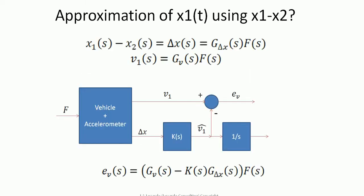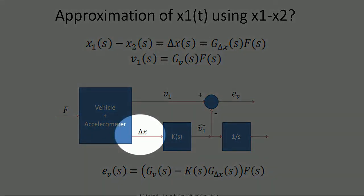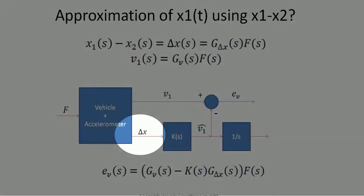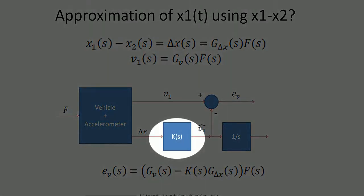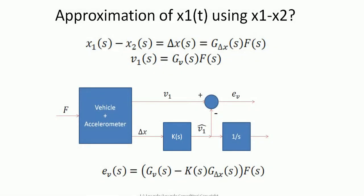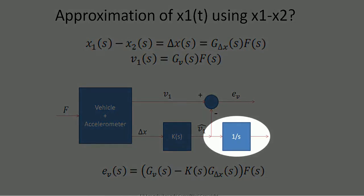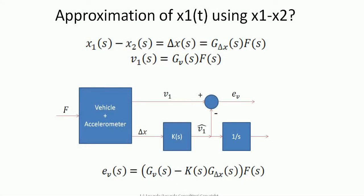Let's try to remember what we did before. The idea was to use the spring deflection measurement to estimate the position of the vehicle. We said that the spring deflection measurement cannot be used directly, but that we have to condition it with a filter K(s) that requires an integrator to obtain an estimate of the vehicle's velocity. Then the use of a second integrator will allow us to obtain an estimate of the position.